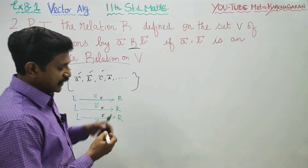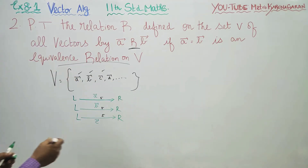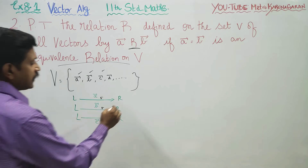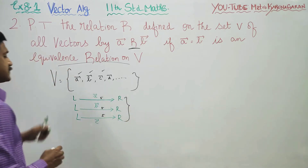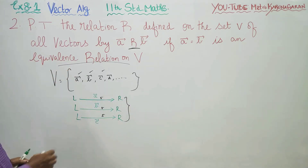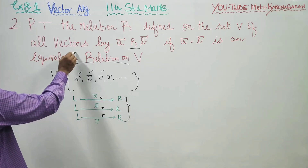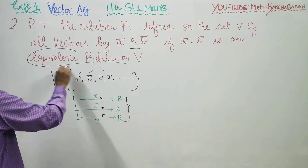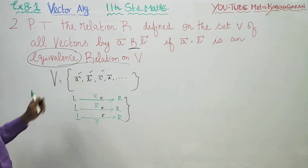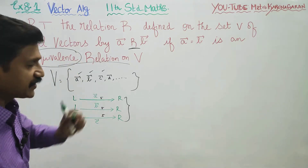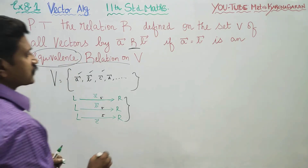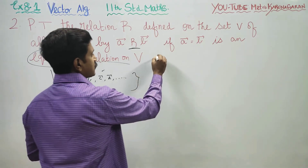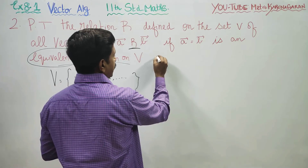I have chosen three vectors A, B, C to prove that my relation R is an equivalence relation. First, I have to start with the reflexive property.